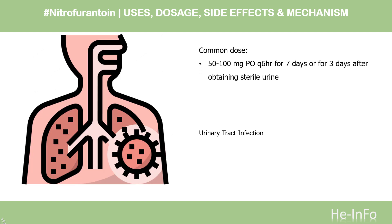Dose — Urinary tract infection: Susceptible strains include Escherichia coli, Enterobacter SPP, Klebsiella SPP, Staphylococcus aureus, and S. saprophyticus. Macrocrystals (macrodantin, furidantin, and equivalents): 50–100 mg PO Q6HR for 7 days, or for 3 days after obtaining sterile urine.